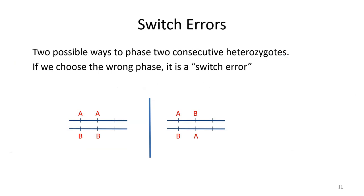Switch errors are the most common way of measuring errors in phased data. If you have two heterozygous genotypes — calling the two alleles at each marker A and B — there are two ways those genotypes can be phased, i.e., two ways to infer how the data was passed down from the parents. On the left, the A alleles are both on the same haplotype; on the right, they're on different haplotypes. One is correct, one is wrong. If we choose the wrong case, it's called a switch error.